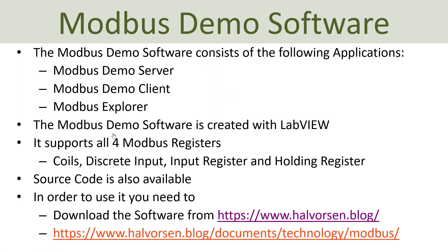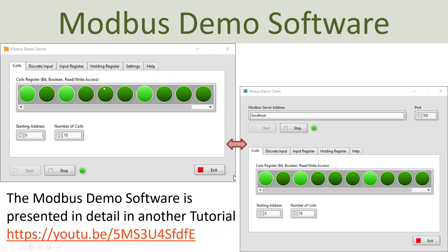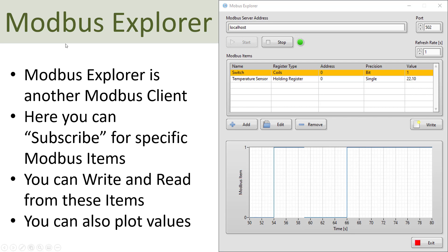Here you see the Modbus Demo Server, which supports the four different Modbus registers: coils, discrete input, input register, and holding register. Detailed information about the Modbus Demo Server and the Modbus Demo Client can be found in another tutorial, while the focus in this tutorial is the Modbus Explorer. Basically, Modbus Explorer is another Modbus client, but here you can subscribe to specific Modbus items. You just specify the server address and the port, then start or stop the connection to the server.